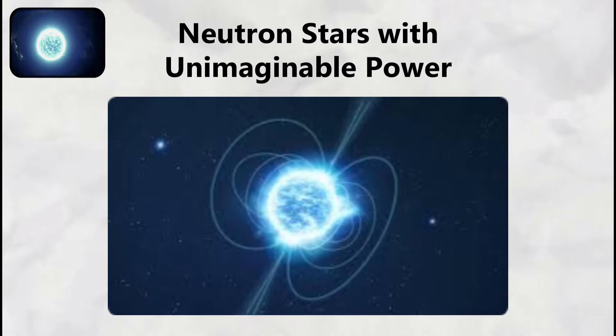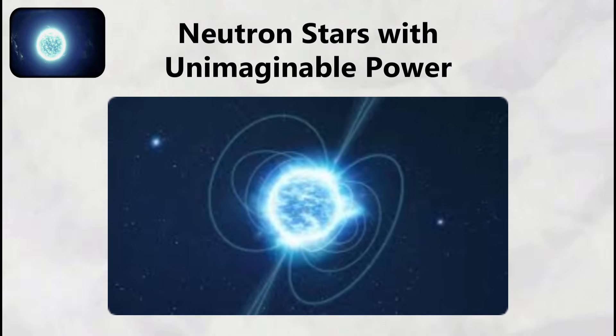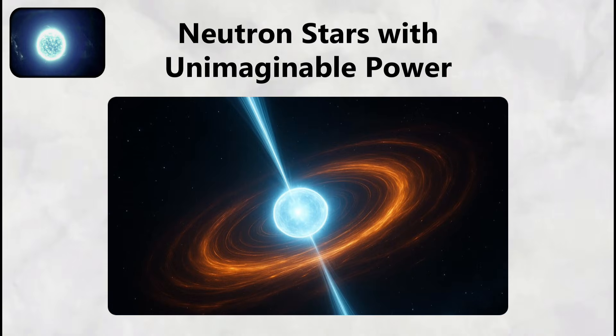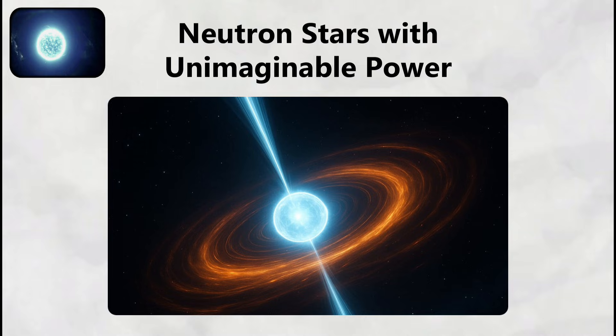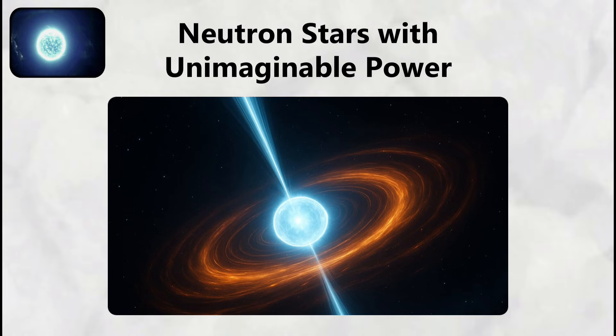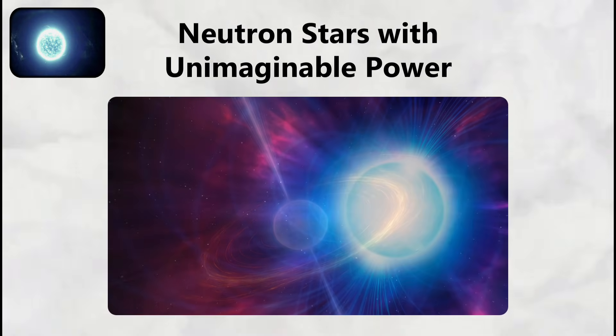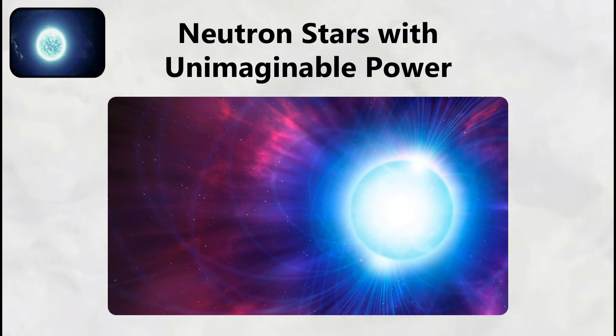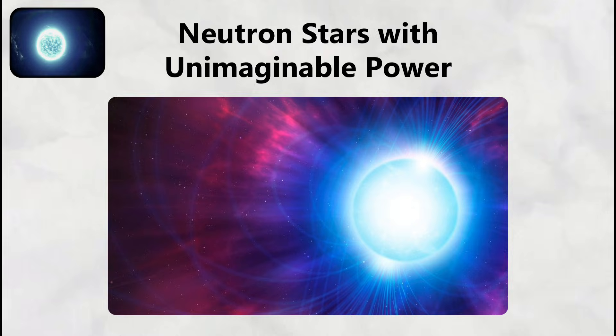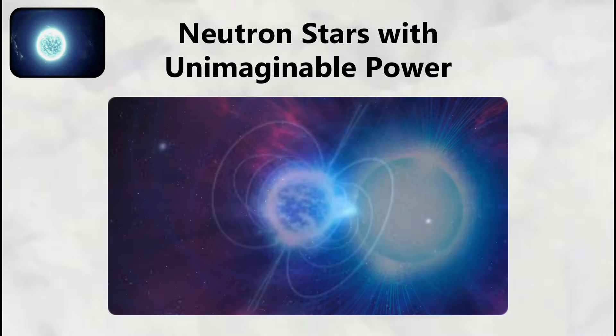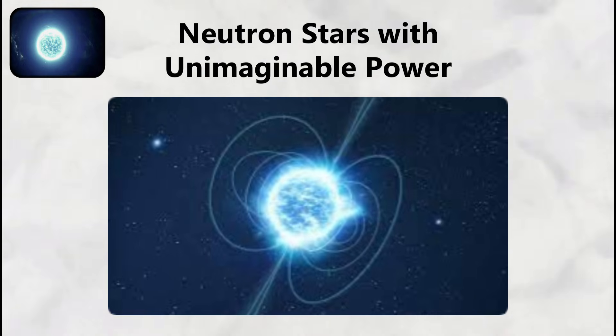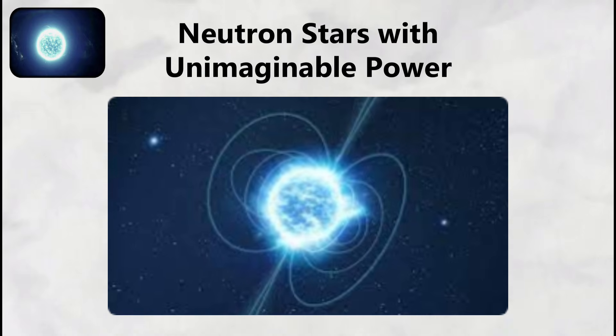Neutron Stars with Unimaginable Power. Magnetars represent the most magnetically powerful objects in the known universe, neutron stars with magnetic fields so intense they defy comprehension and pose existential threats across vast distances of space. These stellar remnants form when massive stars between 10 and 25 times the mass of our sun collapse in supernova explosions, compressing their cores into spheres only 20 kilometers in diameter while retaining masses greater than our sun.